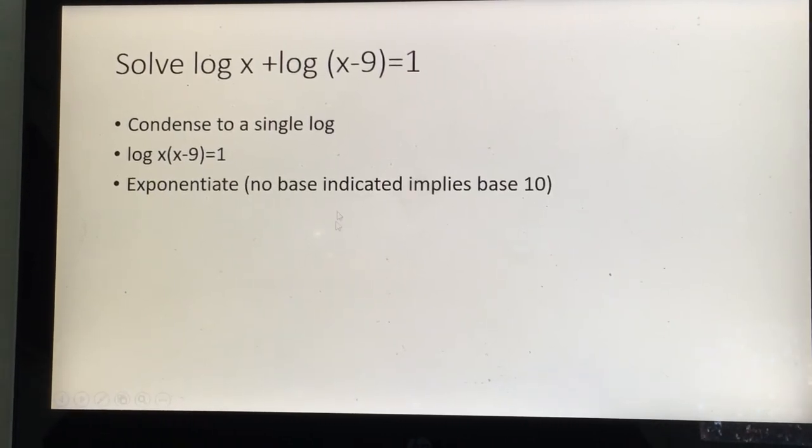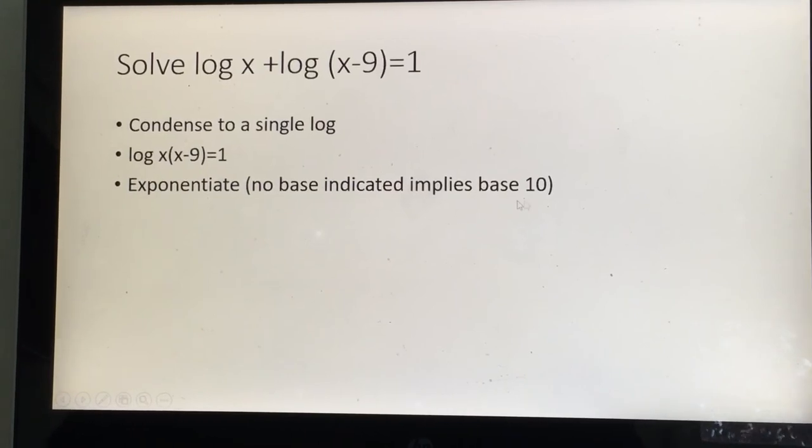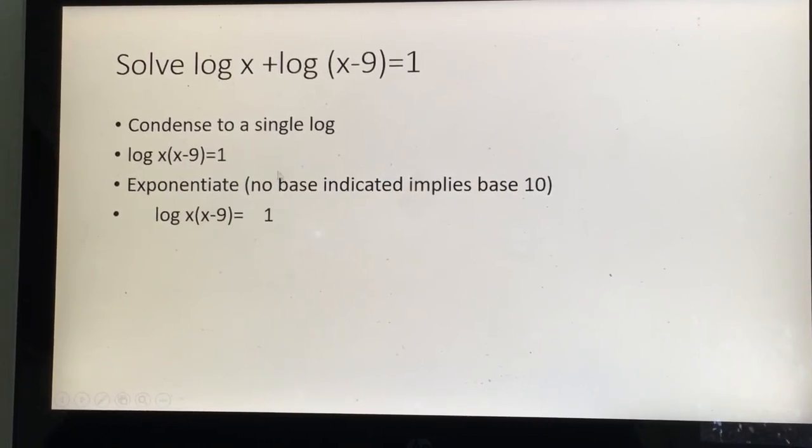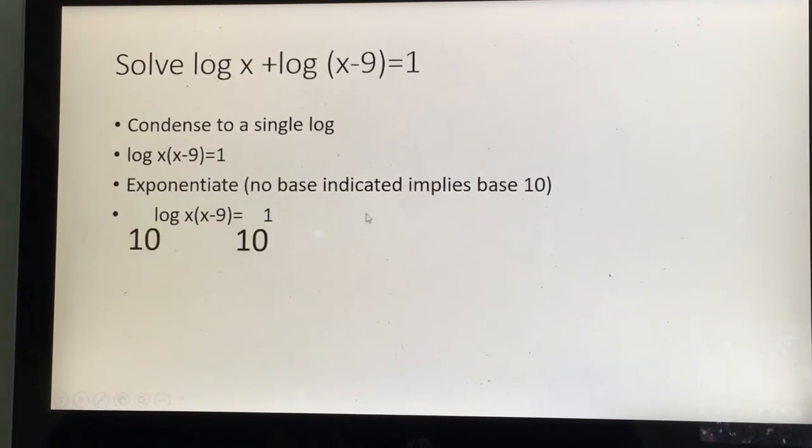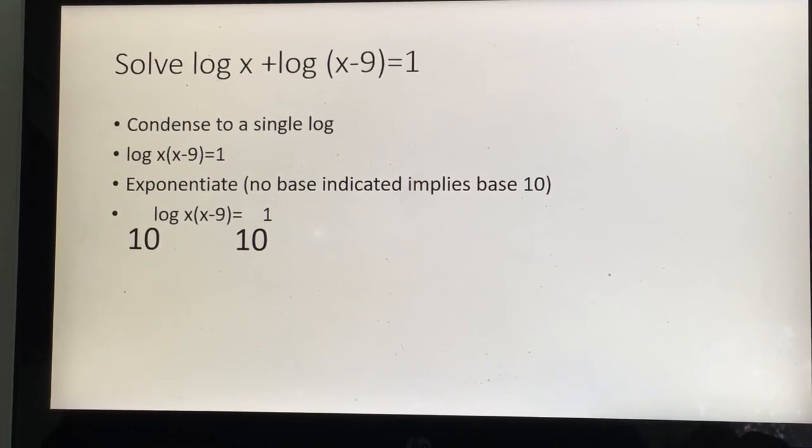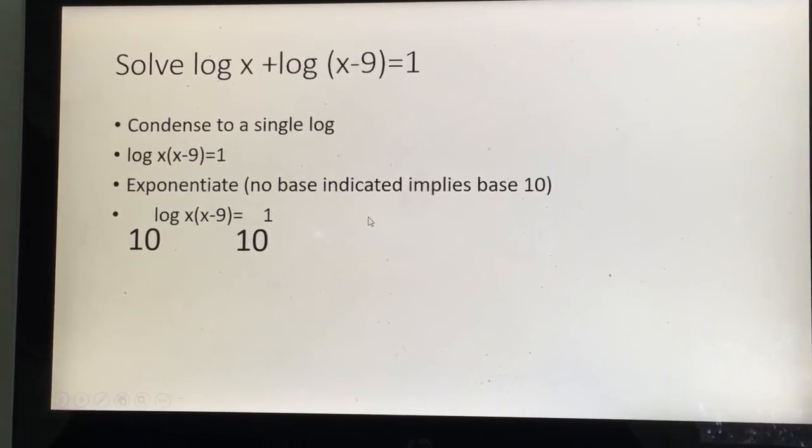Now there's no base indicated here, so it implies it's base 10. It's common log. So we're going to exponentiate with 10s. Okay, on both sides. What you do to one side do the other side. The 10 and log x - the log they cancel out. So you just have x times x minus 9 equals 10.